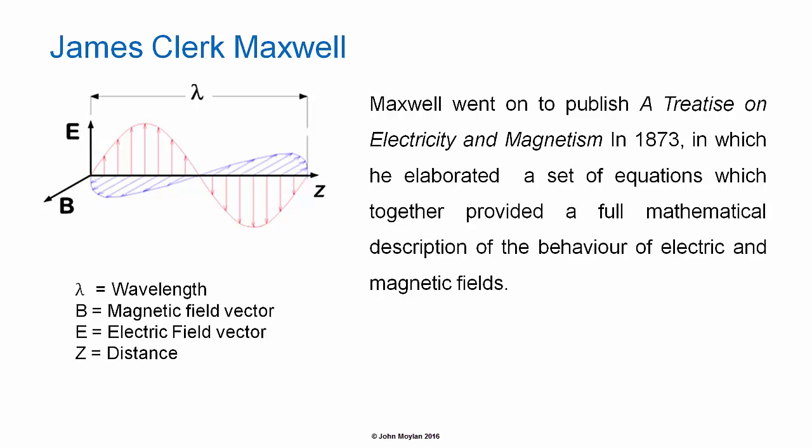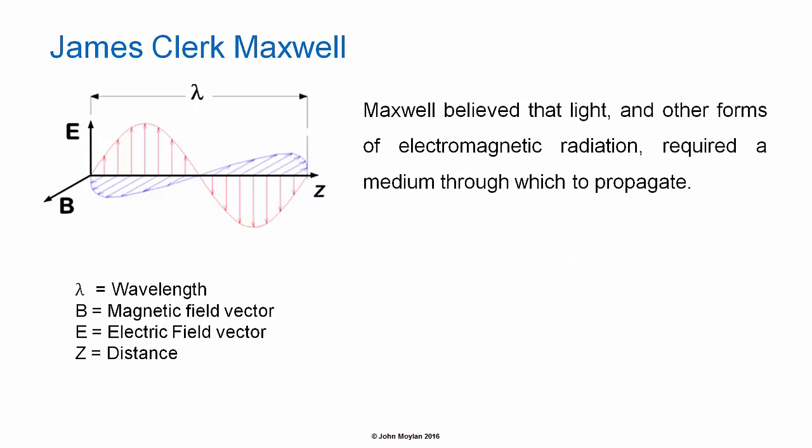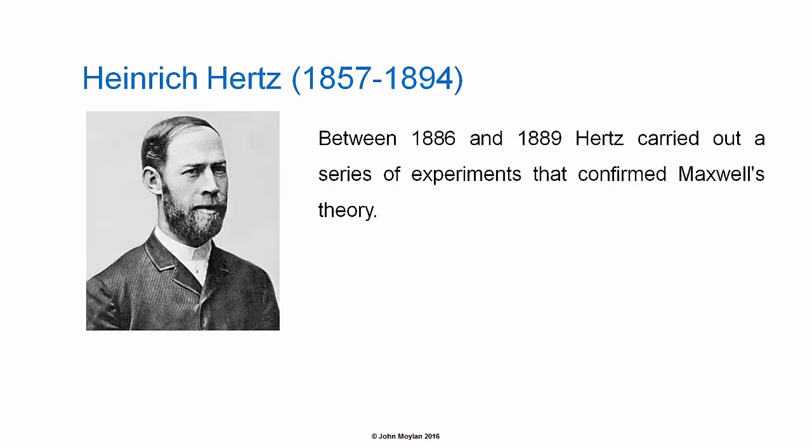Maxwell went on to publish a treatise on electricity and magnetism in 1873, in which he elaborated a set of equations, which together provided a full mathematical description of the behavior of electric and magnetic fields. Maxwell believed that light and other forms of electromagnetic radiation required a medium through which to propagate.